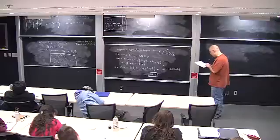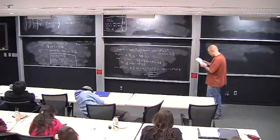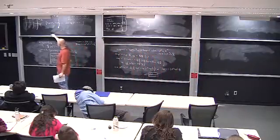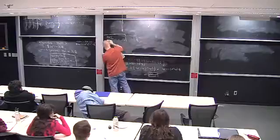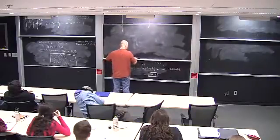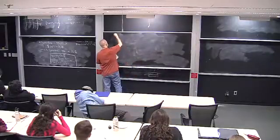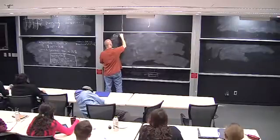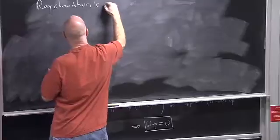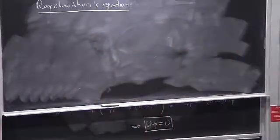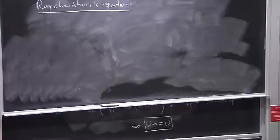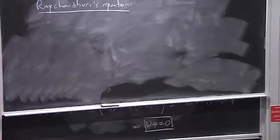Recall our discussion of fluid mechanics — I never wrote down Euler's equation telling us what the acceleration of each fluid element was; I was just describing the relative velocity between two neighboring elements, which is pure kinematics. Here it's the same. When I write down the congruence equations I'm describing the relative velocity of two neighboring geodesics — again kinematics. The geodesic deviation equation involved dynamics; Raychaudhuri's equation takes us to that dynamics level.